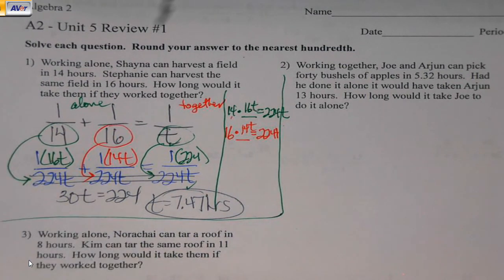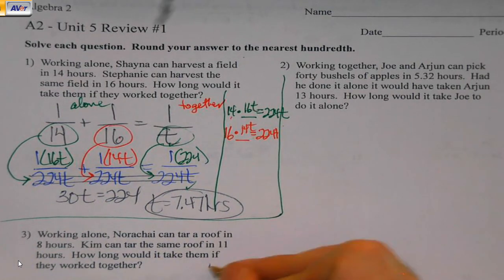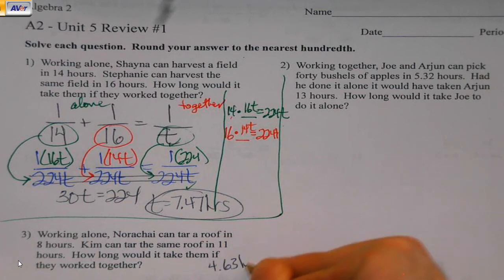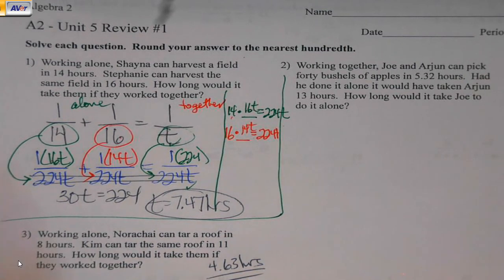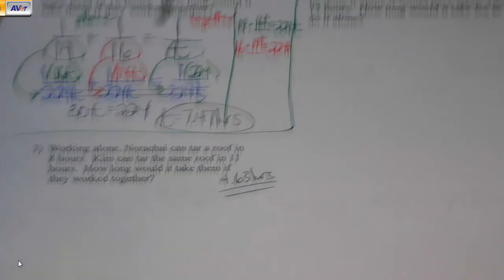The one thing I will do for you on that problem, however, is I don't mind telling you what your answer should be. And that would be 4.63 hours. So if you're working at home on your own, that is what you should be getting for that problem.